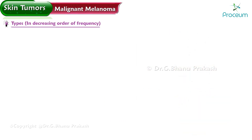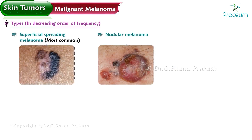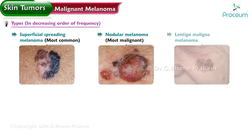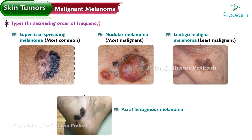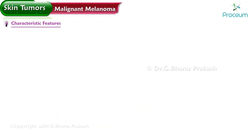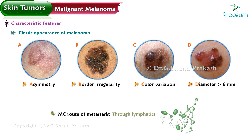Types of malignant melanoma in decreasing order of frequency: superficial spreading melanoma (most common), nodular melanoma (most malignant), lentigo maligna melanoma (least malignant), and acral lentiginous melanoma (least common, worst prognosis). Classic ABCD features include asymmetry, border irregularity, color variation, and diameter greater than six millimeters. The most common route of metastasis is through lymphatics.